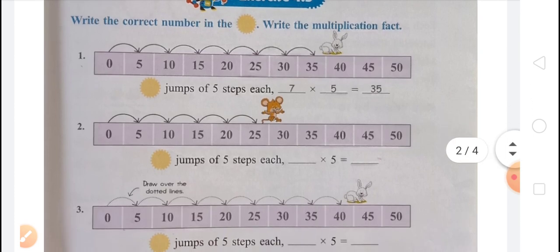In the next question, a mouse jumps: 0 to 5 — 1; 5 to 10 — 2; 10 to 15 — 3; 15 to 20 — 4; and 20 to 25 — 5. So the mouse jumps 5 jumps, and in each jump there are 5 steps. In the circle, you will write 5. 5 jumps of 5 steps each. So multiplication fact will be 5 multiplied by 5 equals 25.